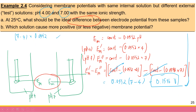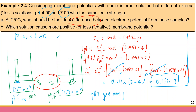For part (b): pH 4 has higher proton concentration than pH 7. Since more protons bind to the external side of the glass membrane, pH 4 gives a more positive membrane potential compared to pH 7.